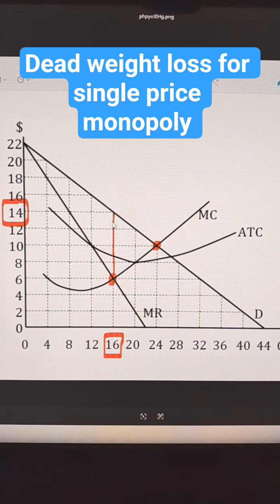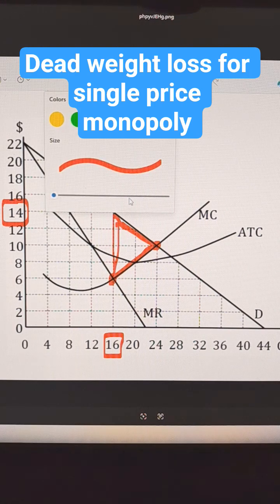And the markup is 8. So the deadweight loss is going to be the area of this triangle. It's the combined loss to consumer and producer surplus.